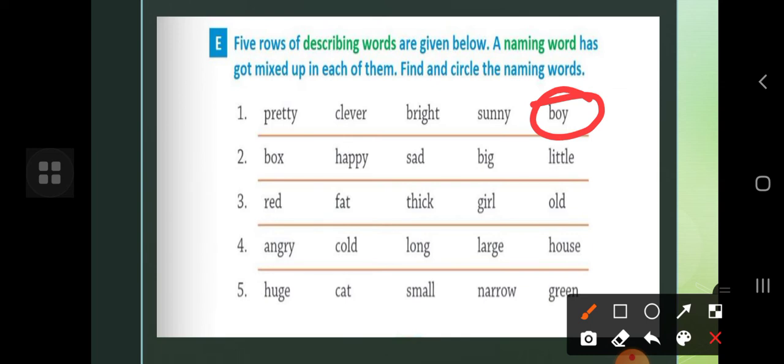Box, happy, sad, big, little. Happy is a describing word, happy boy. Sad is also a describing word. Big, big is a big house like this. Little, little boy. So here box is a naming word.